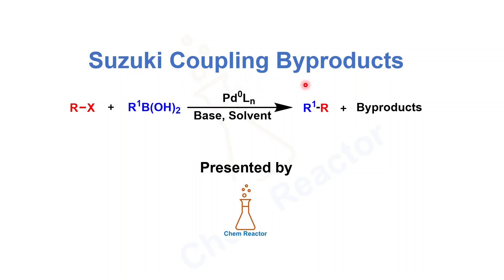Suzuki is a very important carbon-carbon bond forming reaction in organic synthesis. Since it's a very well-known reaction, there is a lot of literature available on the internet covering the reaction as well as the reaction mechanism, but you don't find a lot of reports on the byproducts of Suzuki coupling reactions.